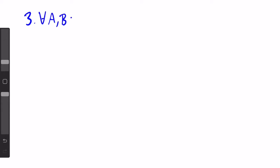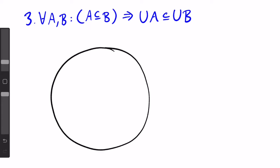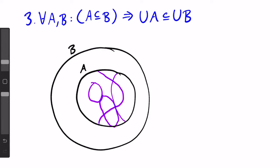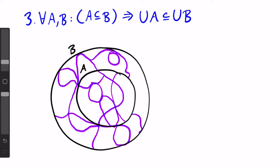Next is for all A and B: if A is a subset of B, then union A is a subset of union B. For a refresher on big union, click on the card to watch lesson two. Let's visualize this with another Venn diagram. We have A inside B, and this time A and B are sets of sets, so we can draw some partitions representing the sets that make up A and B. These partitions can intersect with each other just as sets inside the bigger sets A and B can share elements.